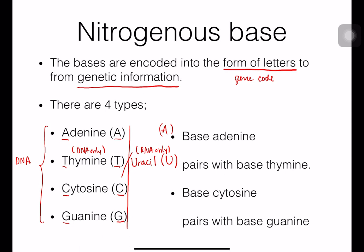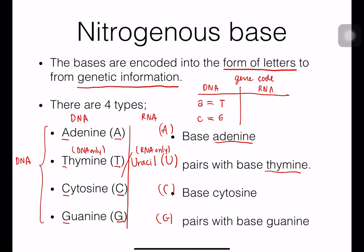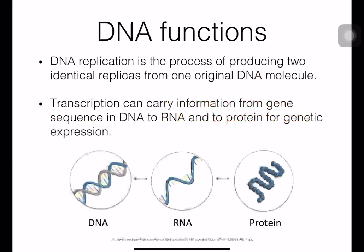So in DNA we have A, T, C, and G, and in RNA we have A, U, C, and G. The base pairing in DNA is: adenine pairs with thymine (A with T) and C with G. In RNA base pairing, A pairs with U and C pairs with G. DNA has two main functions.